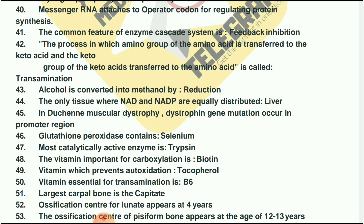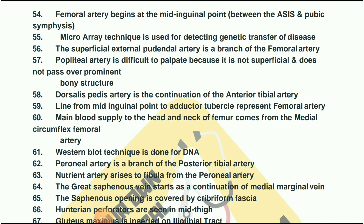The ossification center for lunate appears at four years. The ossification center of pisiform bone appears at the age of 12 to 13 years. The femoral artery begins at the mid-inguinal point between the ASIS and pubic symphysis. Microarray technique is used for detecting genetic transfer of disease.